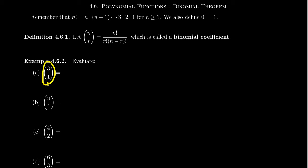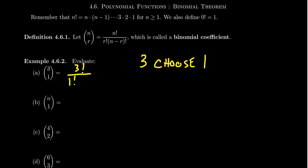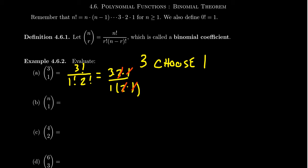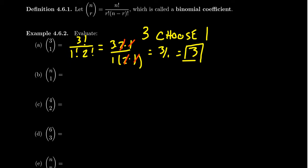When you see this binomial coefficient, you read it as '3 choose 1' because this is about choosing things. So 3 choose 1 is going to be 3 factorial over 1 factorial times 2 factorial. Notice that 2 plus 1 equals 3. So 3 factorial is 3 times 2 times 1; 1 factorial is just 1; and 2 factorial is 2 times 1. You get a nice cancellation — the 2 cancels, the 1 cancels — leaving 3 over 1, which is just 3. So 3 choose 1 turns out to be the number 3.